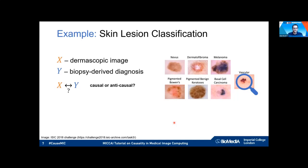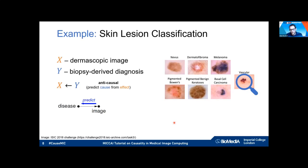We believe this is an anti-causal relationship. If you think about the data generating process, there is an underlying disease that causes how the image looks — how those skin lesions look — and the biopsy-derived diagnosis gets as close as possible to the true disease status. So predicting from image to disease is an anti-causal setting.